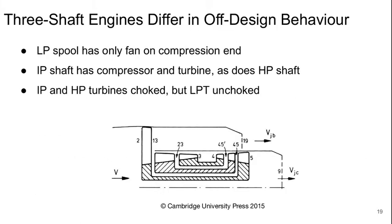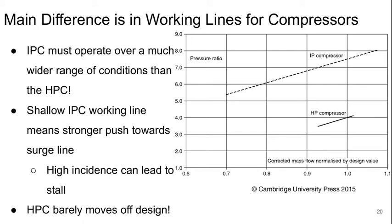The last topic is what happens in three-shaft engines. Here the LP spool only has the fan on the compression end, the IP shaft has a compressor and a turbine, as does the HP shaft. The intermediate pressure and high pressure turbines are choked, but the inlet to the low pressure turbine is typically unchoked for this configuration. This complicates the design procedure, but it could still be done via an iterative process similar to what was developed for two-shaft engines. The main difference is in the working lines for the compressors.